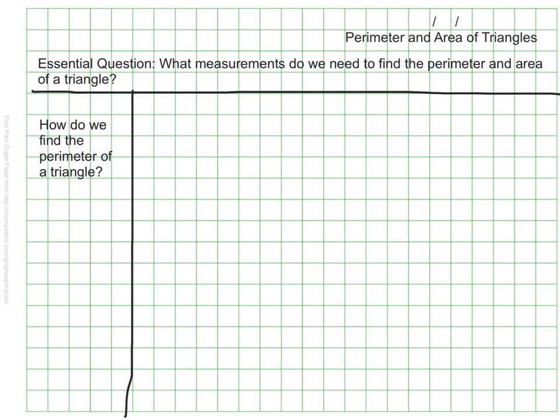Perimeter is the distance around a shape, so just like we did when we found the perimeter of a rectangle, we need to total the lengths of each side. For triangles, that looks like perimeter equals side plus side plus side.